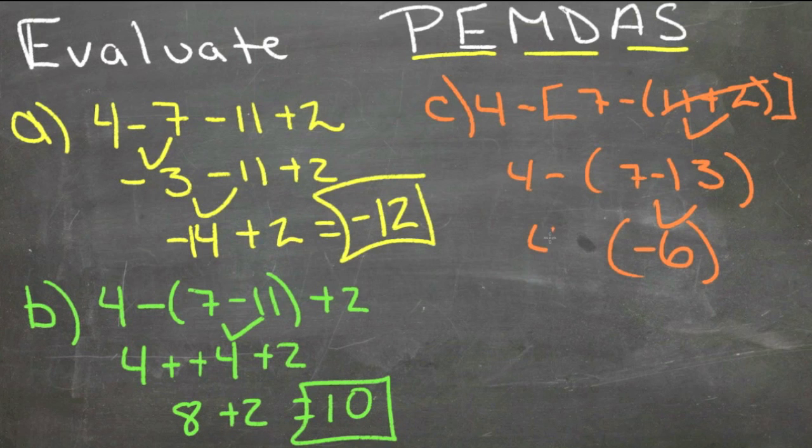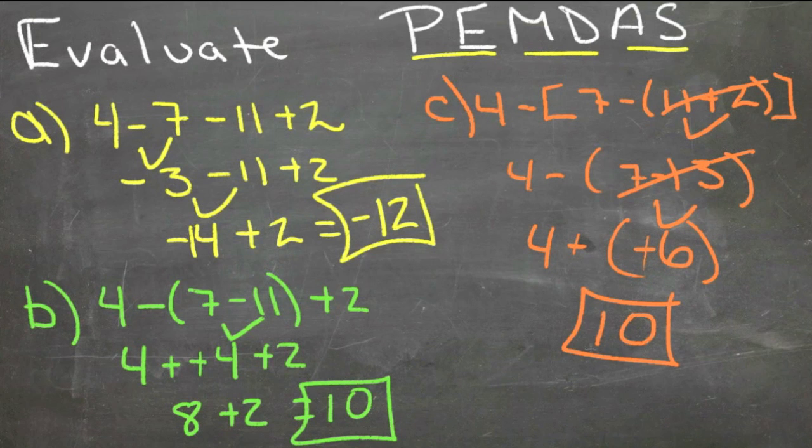Now we have 4 minus negative 6. Again, subtracting a negative is the same as adding, so we have 10. And you can see here that changing the order of operations sometimes doesn't change the answer at all and sometimes it changes it a lot.